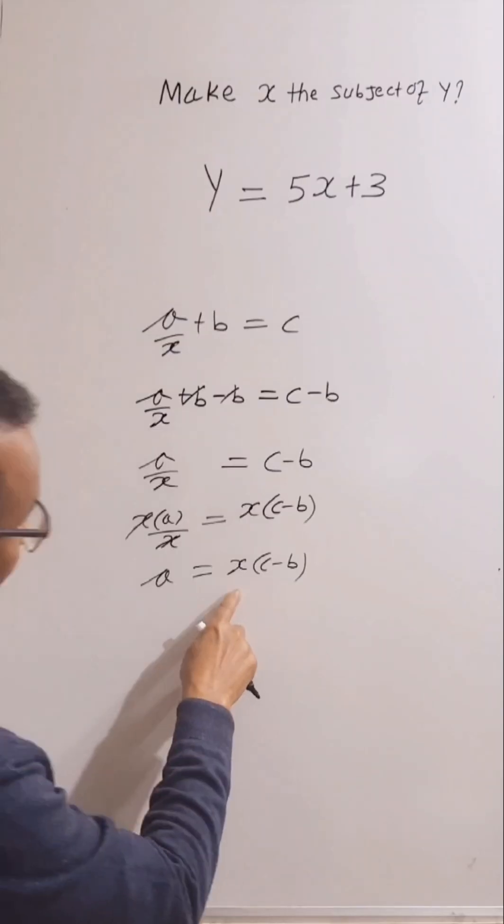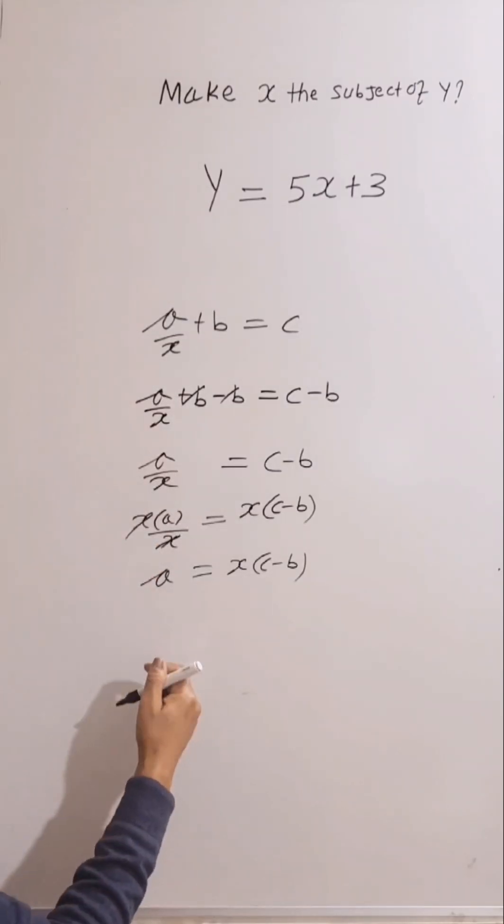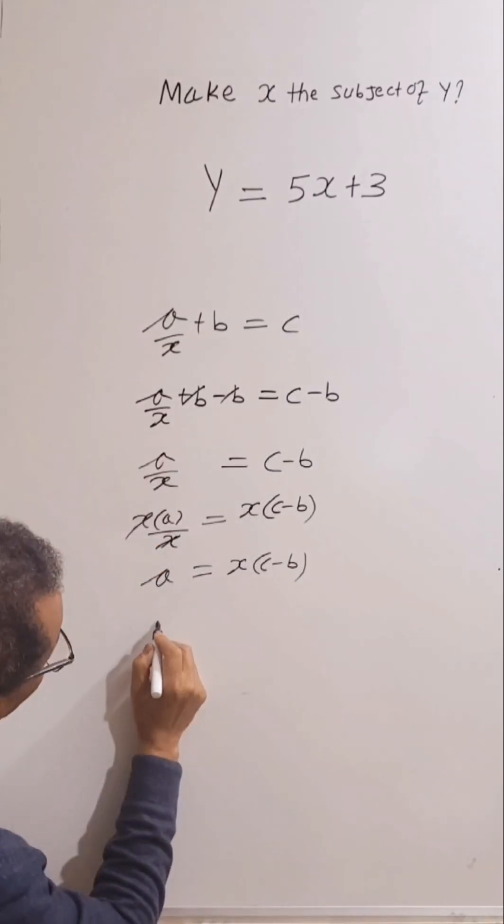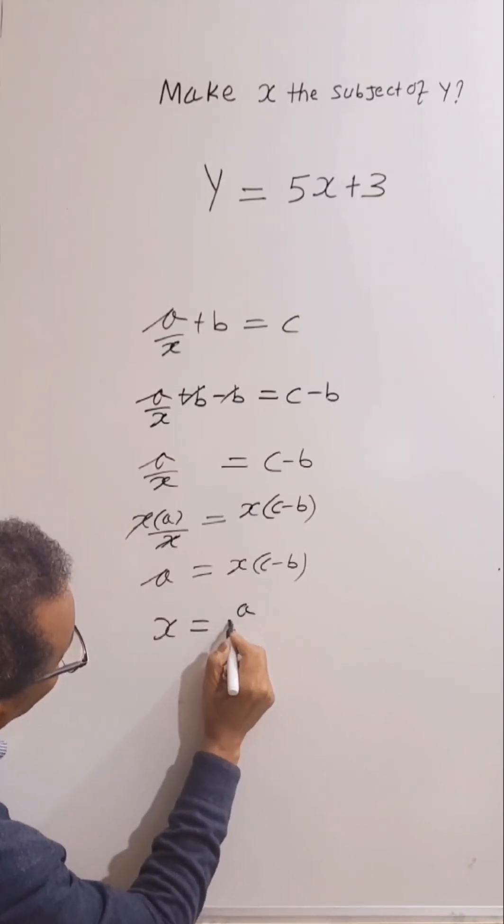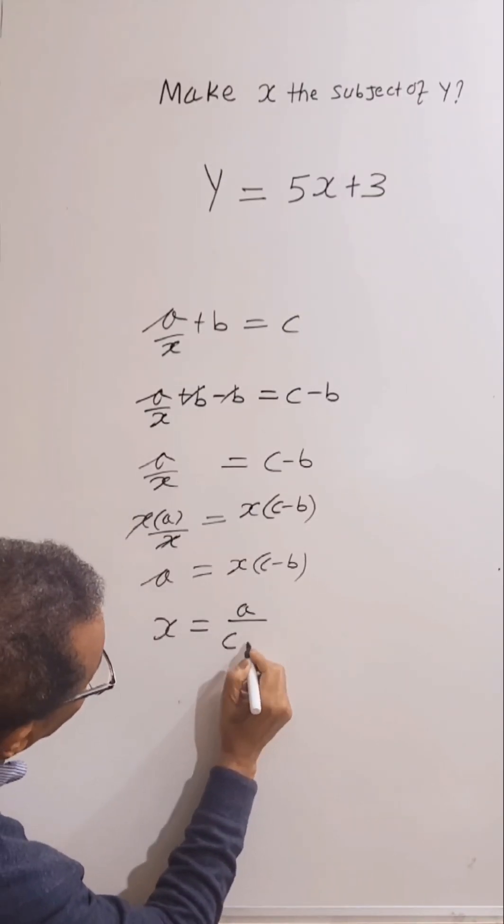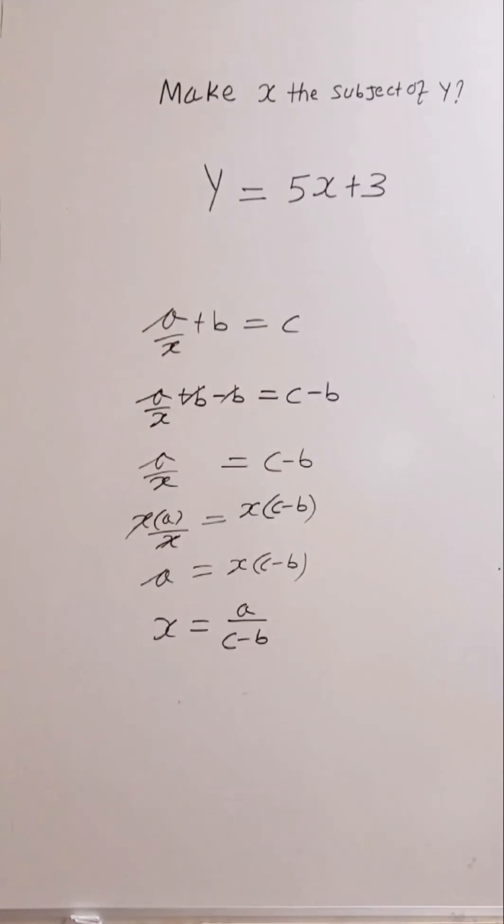From here, we can make x the subject by dividing A by dividing this one. And x equals A divided by C, take away B.